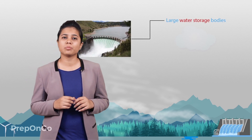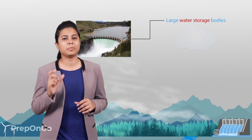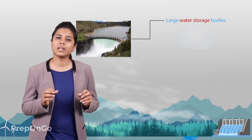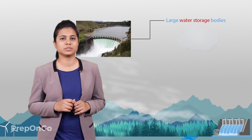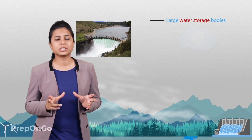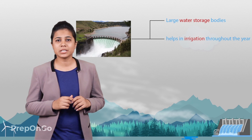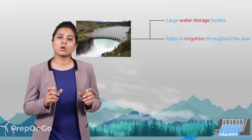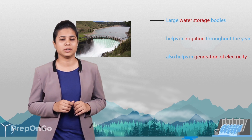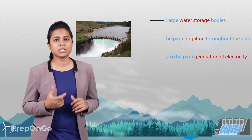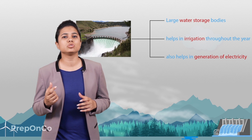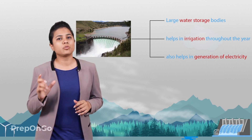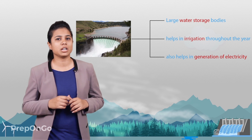The best way to manage river water is by constructing dams over them. Dams are large water-storing bodies built by government agencies across rivers to regulate the flow of water. They store enormous amounts of water which helps in irrigation throughout the year. Apart from this, they also help in generation of electricity — the water from dams is allowed to flow downstream to generate electricity and the same water is then directed to agriculture fields.